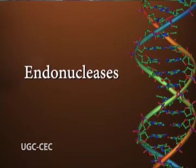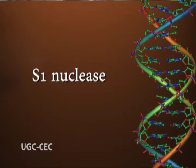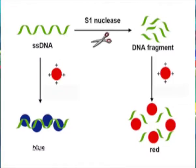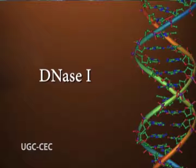Similar to exonucleases, endonucleases can also be categorized based on whether they act on single or double-stranded DNA. S1 nuclease is an endonuclease isolated from the fungus Aspergillus oryzae. It is a heat-stable enzyme that functions at high ionic strength, low pH, and in the presence of zinc ions. It cleaves only single-stranded DNA, and is also able to cleave single-stranded nicks in double-stranded DNA molecules.